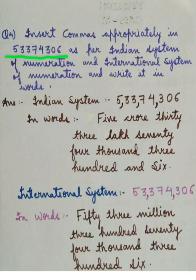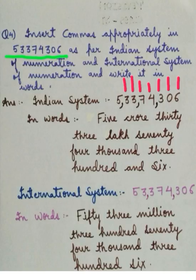The thousands period contains two digits: thousands and ten thousands. The next period also contains two digits: lakhs and ten lakhs. The last period also contains two digits: crores and ten crores. In short, the first period contains three digits and the remaining periods contain two digits each. We insert a comma after every period to distinguish it. We always start inserting commas from the right, and we start counting different periods also from the right.